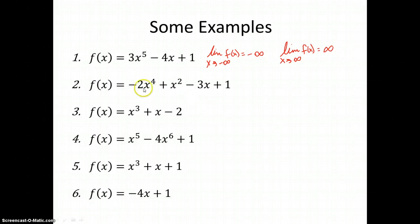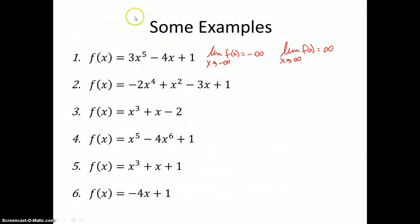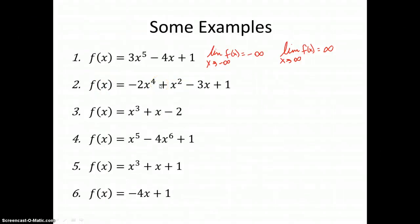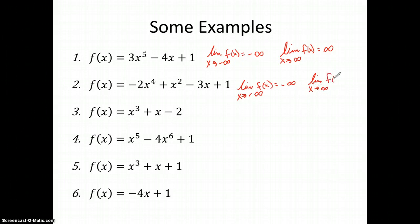Let's look at the next one: negative 2x to the fourth. We have x to the fourth, which is an even degree. And our leading coefficient is negative 2. So with a negative leading coefficient, these are going to be our end behaviors. The limit as x approaches negative infinity is negative infinity, and the limit as x approaches positive infinity is negative infinity — we go both the same way.